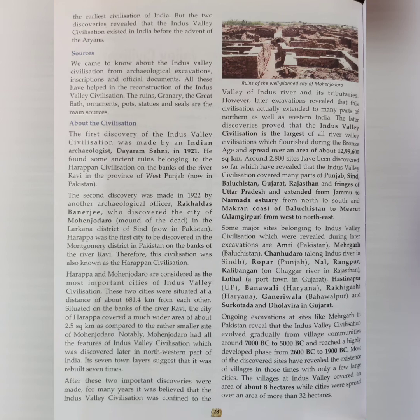Harappa and Mohenjo-daro are considered the most important cities of the Indus Valley Civilization. These two cities are situated at a distance of about 681.4 km from each other. Situated on the bank of the river Ravi, the city of Harappa covered a much wider area of about 2.5 km² compared to the smaller site of Mohenjo-daro. Notably, Mohenjo-daro had all the features of Indus Valley Civilization.